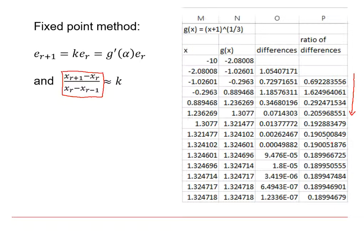So in this case it settles on approximately 0.19, and if you were to find the derivative of g of x and substitute in a value that was close to alpha, you should find that it's approximately 0.19.